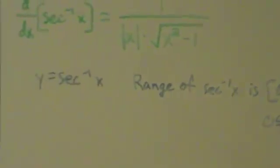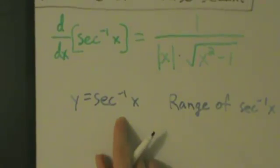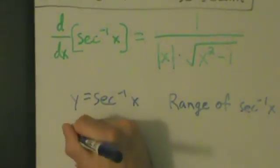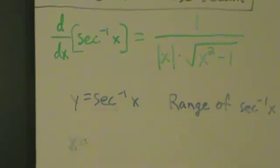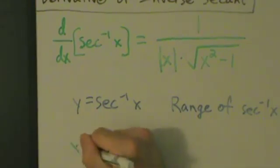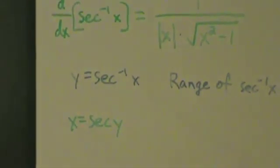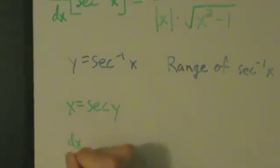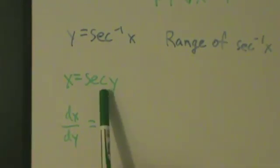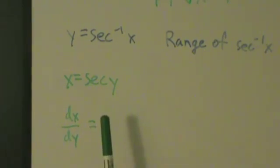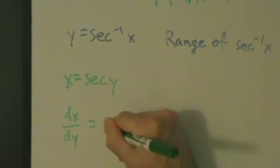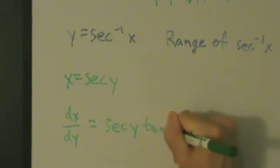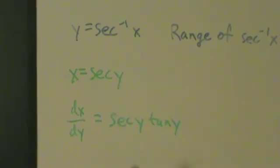If y is the inverse secant of x, then x equals the secant of y. Here x is a function of y, so let's take the derivative of x with respect to y — that's dx/dy. The derivative of secant of y with respect to y is secant of y times the tangent of y.